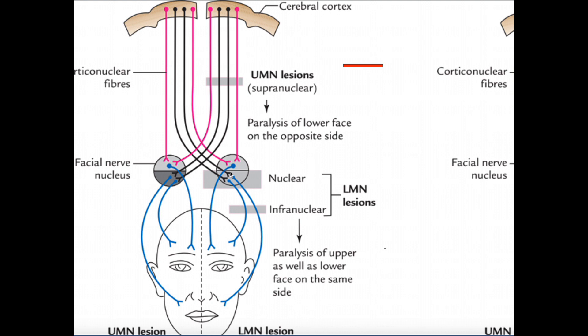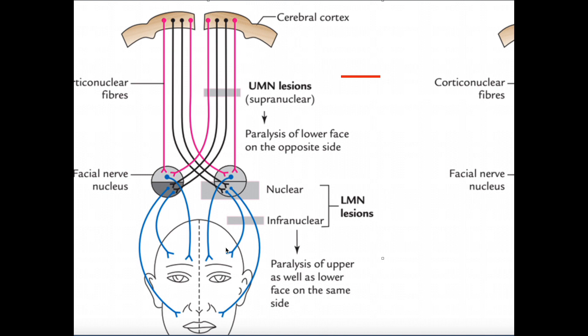Is the forehead innervated bilaterally? In other words, does the left forehead have innervation from both the left brain and the right brain? The answer is yes. Look at this pink one — from the patient's left brain, we follow this upper motor neuron down and it synapses with this lower motor neuron also on the left side. So this left forehead has left brain innervation. But also, here's a neuron on the right side of the brain — we follow it down, and it synapses with the same neuron on the left side. So the forehead has both left brain innervation and right brain innervation.